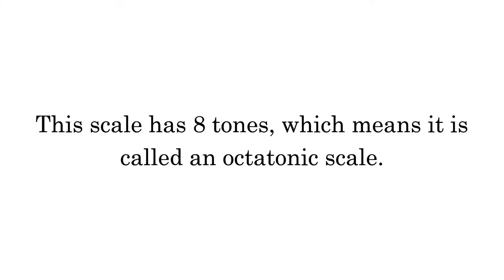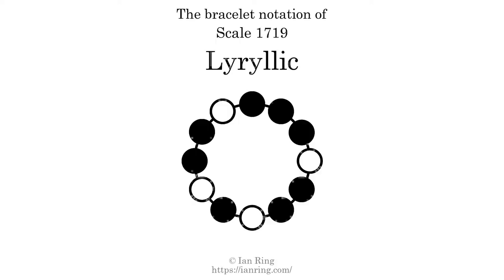This scale has 8 tones, which means it is called an octatonic scale. This is a bracelet notation diagram of Scale 1719. The shaded circles represent tones that appear in the scale, and they are read clockwise, starting at the top.